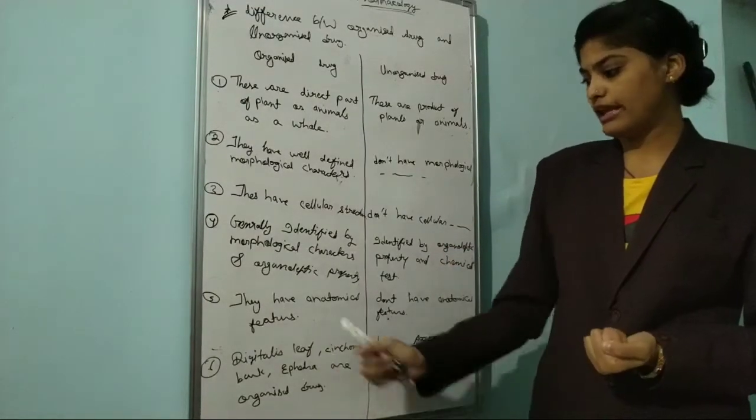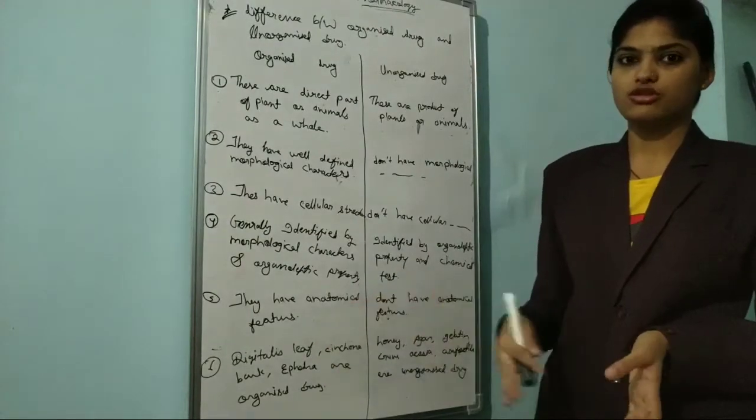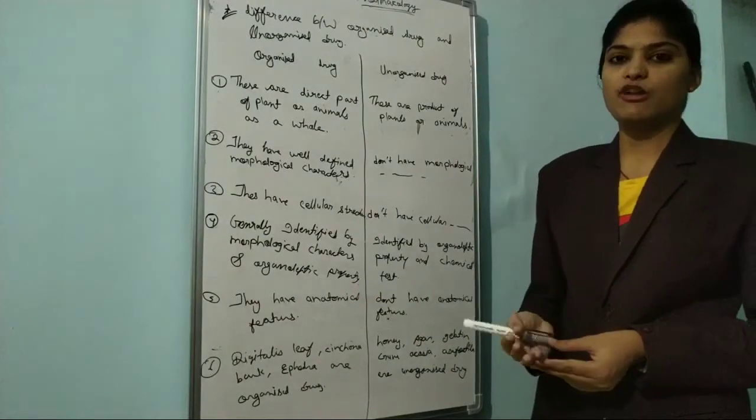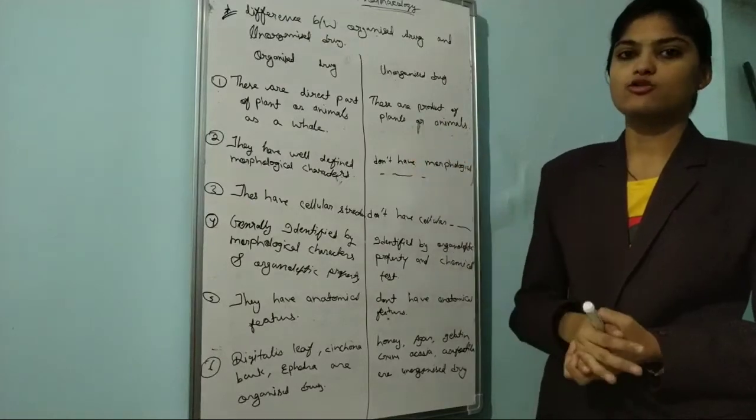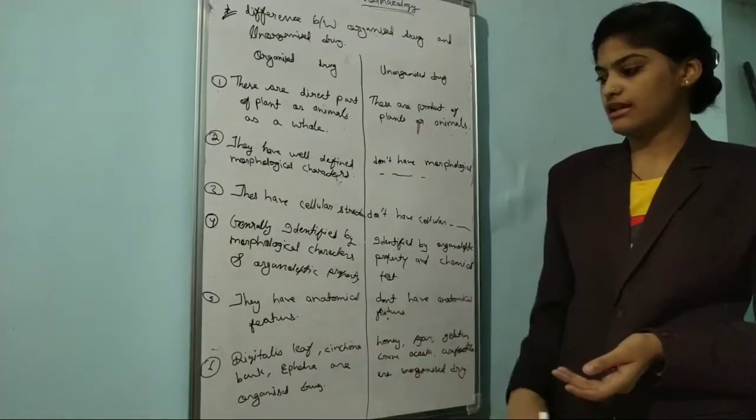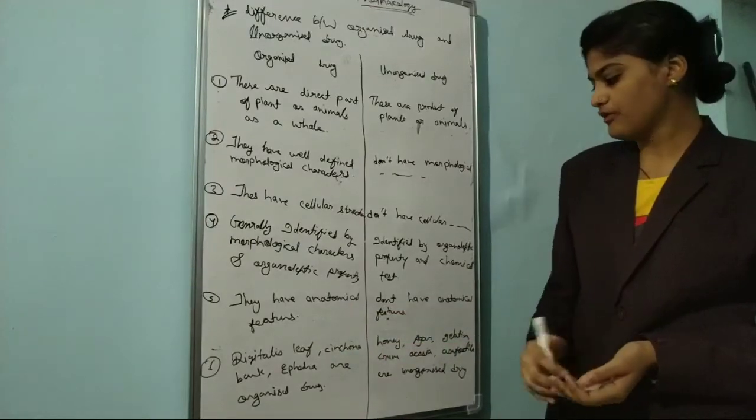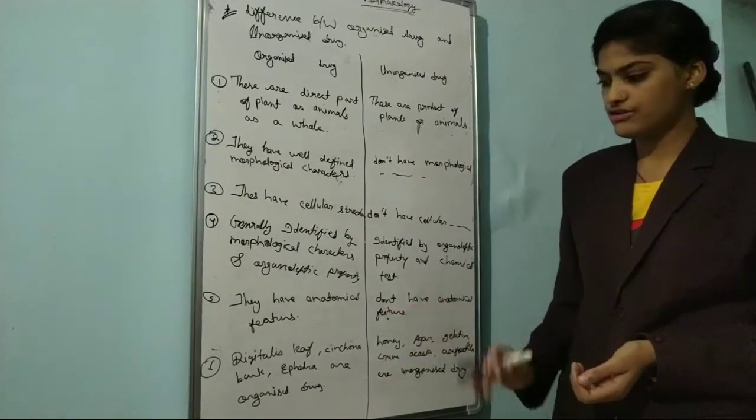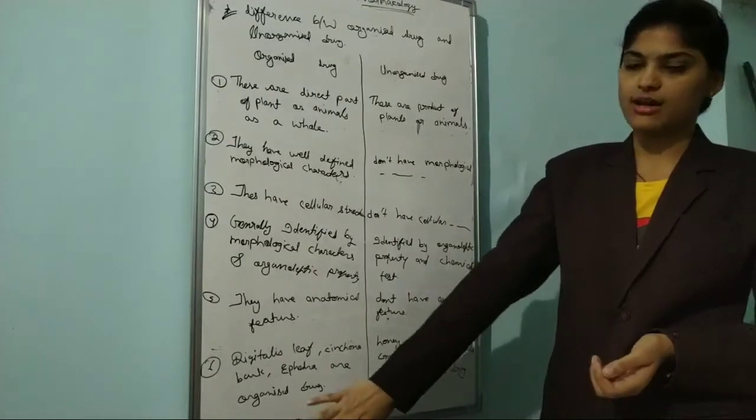Fifth point: organized drugs have anatomical features, like in ginger we have anatomical features. Unorganized drugs don't have anatomical features.